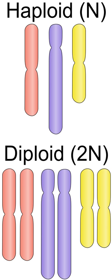Ploidy is the number of complete sets of chromosomes in a cell, and hence the number of possible alleles for autosomal and pseudoautosomal genes. Somatic cells, tissues and individuals can be described according to the number of sets present — the ploidy level.